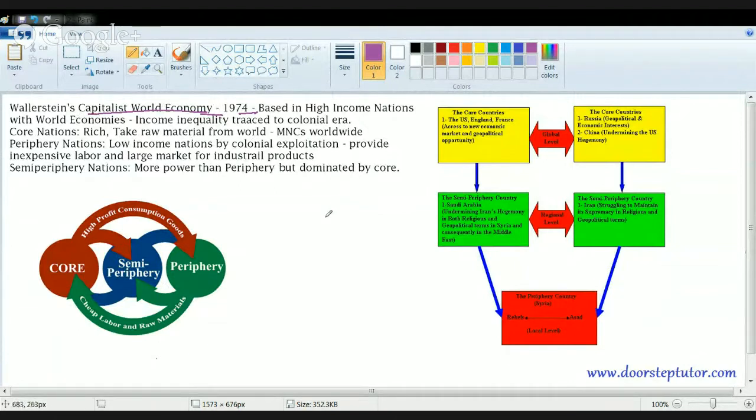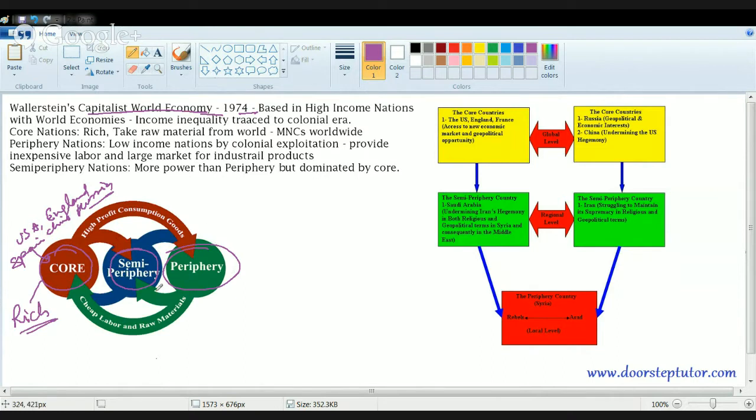It basically said that high-income nations form the center of world economy and these high-income nations usually get the money from colonial exploitation. So he divided the nations into three categories: core, semi-periphery and periphery. Core nations are the countries of United States of America. You have England, Spain, France and then you have China and Russia. These are the core nations. They say that these core nations are rich. They take raw material from the rest of the world. They have a lot of multinational corporations coming up, a lot of MNCs. And these are the nations which try to technically exploit the remaining nations.